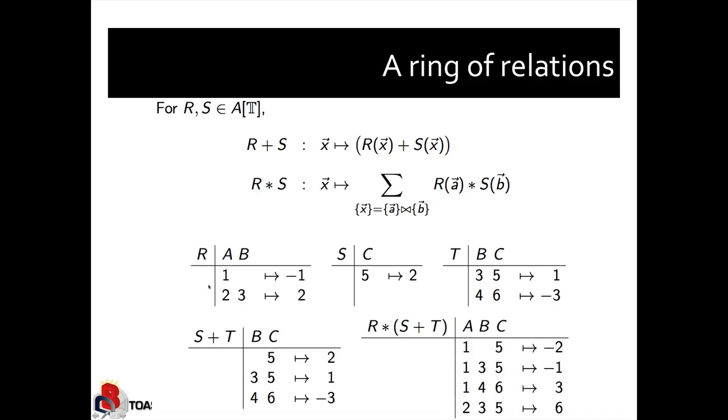Now, let's multiply the relation R with S plus T. Conceptually, we have to apply this operation, defined as a convolution product here, to every possible tuple. We've done this here, here's the result, and there are four tuples that have non-zero multiplicity. The first, mapping A to 1 and C to 5, can be obtained by combining the first tuple of R and the first tuple of S plus T. And the multiplicity is minus 1 times 2, which is minus 2. I can create the tuple 1, 3, 5 from the first tuple of R and the second tuple of S plus T, and the multiplicity is minus 1 times 1, which is minus 1.